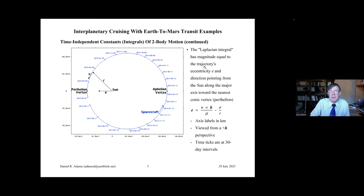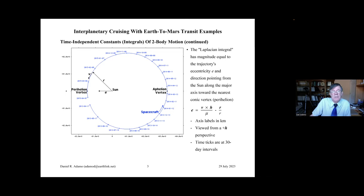Let's look at another integral that's also a vector — the Laplacian integral. Using V, H, and R along with the constant mu, we can get this vector E, which points toward perihelion from one focus of the ellipse. E is numerically equivalent — if you take its magnitude as a scalar — to the eccentricity of the ellipse. So we have a very useful relationship there. Since nothing can change the ellipse because the only acceleration we're counting is the sun's, E is also a constant. A very helpful quantity.